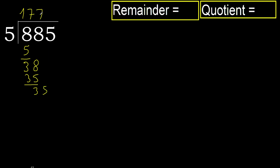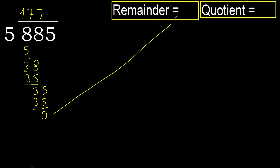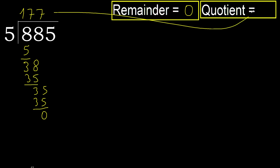5 multiplied by 7 is 35, not greater. Subtract. Next — that is not a number, therefore finish it. 885 divided by 5 is 177.